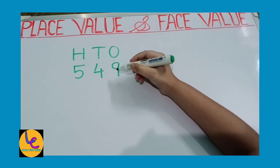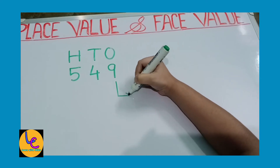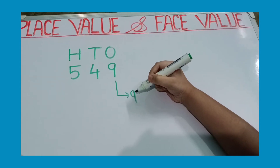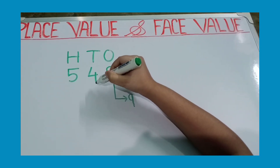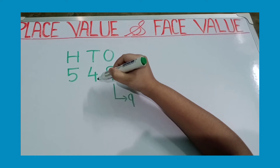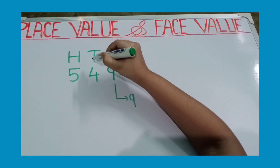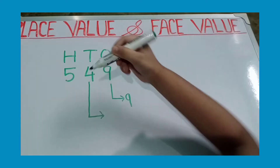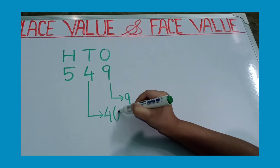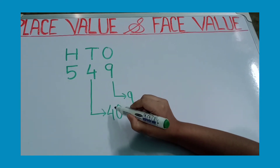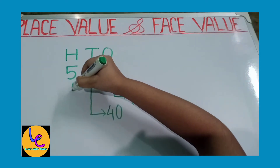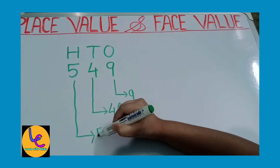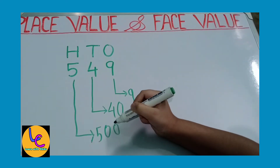The place value of 9 is 9. Now let us see the place value of 4. 4 is in the 10's place, so the place value of 4 is 40. And the place value of 5 is 500.